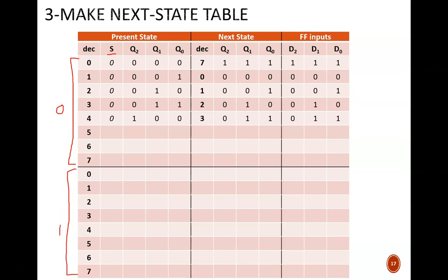Since I decided that S equals zero causes a countdown, we see that decimal zero becomes seven in the top row, one becomes zero in the next row, two becomes one in the next row, and so on. Pause the video now and try to complete this table on the follow-along worksheet.